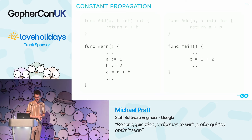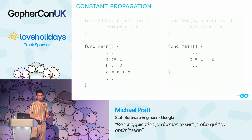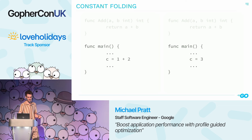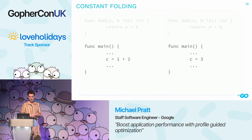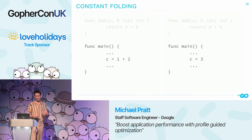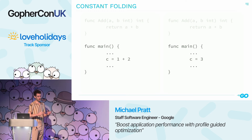Constant propagation is a compiler optimization that replaces values known to be constant with the constants themselves. Here, a and b have constant values, so constant propagation simplifies the program by replacing their uses. Now we have c equals one plus two. Rather than emitting an ADD instruction, the compiler can evaluate the expression itself and replace the entire expression with its result — which is called constant folding.